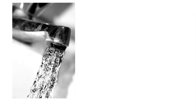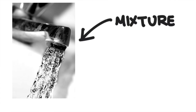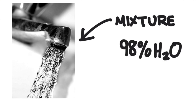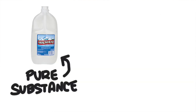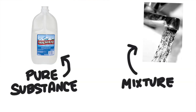Tap water, on the other hand, is a mixture. There would be water, but there's also some other things dissolved in there — so maybe it's only about 98% H2O, and then there are some other compounds all mixed together. Distilled water is a pure substance; tap water is a mixture.